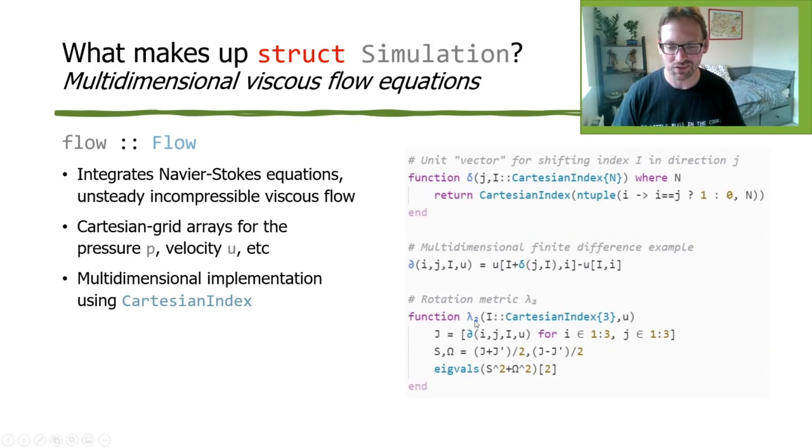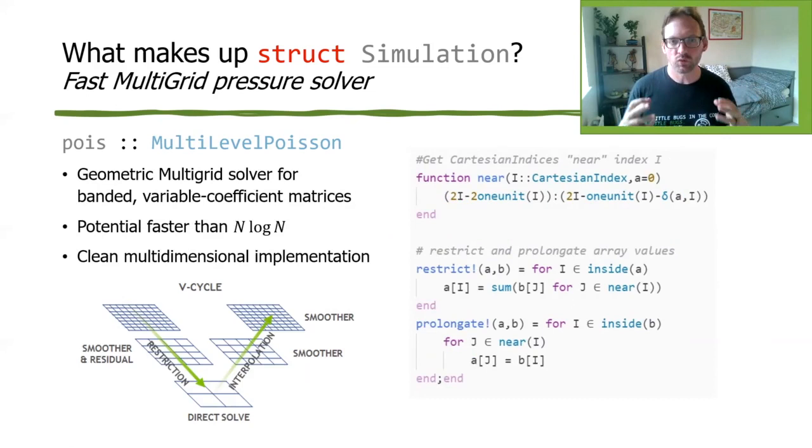Then we could use that velocity derivative function to do anything we want. We can solve the Navier-Stokes equations. A simpler thing here is the lambda 2 rotation metrics. So this is basically how rotatey is the flow at some point. And that's actually what I was visualizing in those videos before of like the Taylor Green vortex and the donut flow.